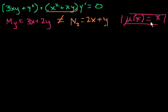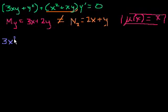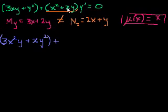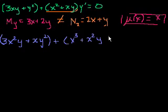This is called the integrating factor. So let's solve the problem now. Let's multiply both sides of this equation by mu, which is x. If you multiply these terms by x, you get 3x²y + xy² + x³ + x²y, times y prime, equals 0.